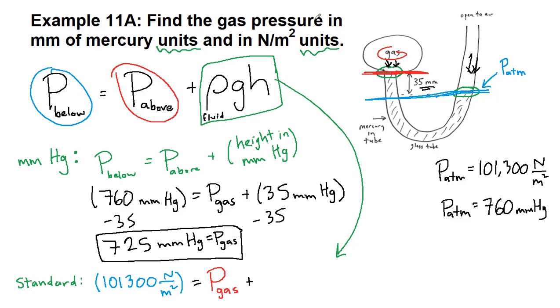And then that last term, we must use all of the standard units. So the density of the fluid, the density of mercury, is 13,600 kilograms per cubic meter. So that density, 13,600. G is the 9.8 that we've been using since chapter 2.